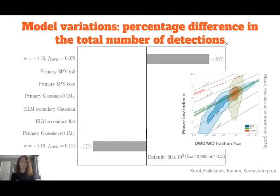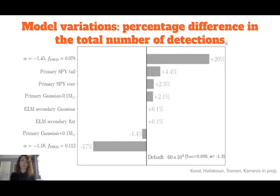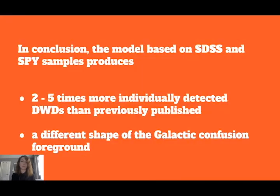To check the robustness of our model, we perform variations by considering the most extreme combinations of alpha and fwd within the one-sigma contour of the joint SDSS and SPY constraint. For the lowest possible values we obtain a 20% increase in LISA detections, and for the highest possible values a decrease of similar magnitude. Other variations affecting mainly the white dwarf masses produce a very moderate effect of at most 4%, giving us confidence that our observationally motivated model is robust.